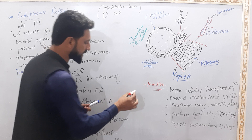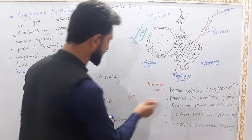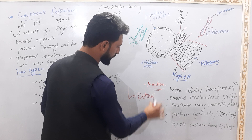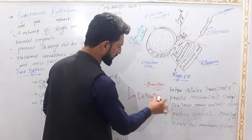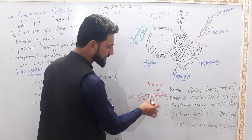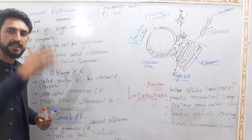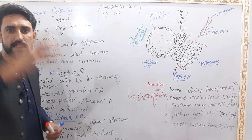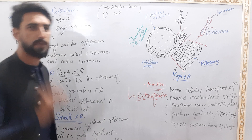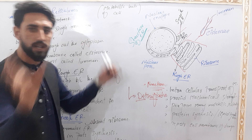The endoplasmic reticulum is the metabolic hub of the cell, just like our liver where most chemical reactions and detoxification take place. It is involved in protein synthesis, lipid synthesis, and repair of the cell membrane. Detoxification refers to the removal of toxic or harmful substances from the cell.